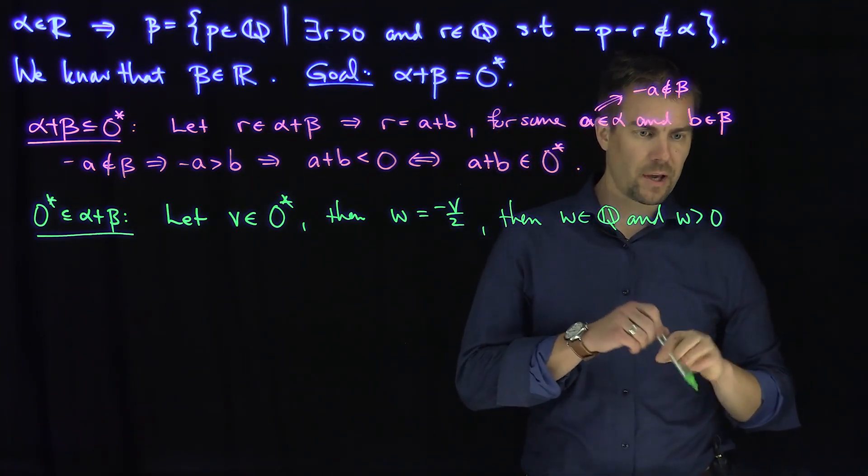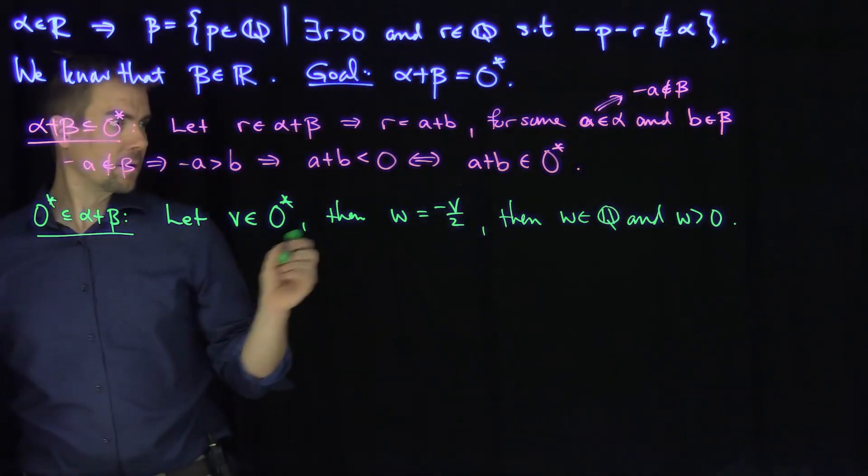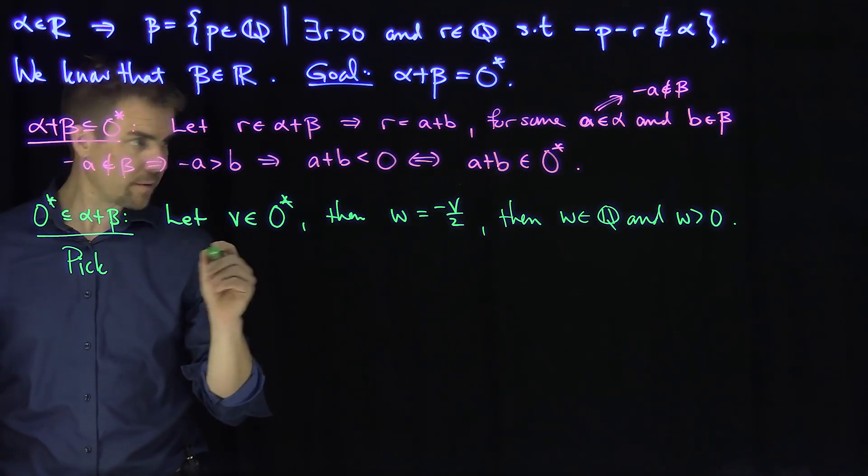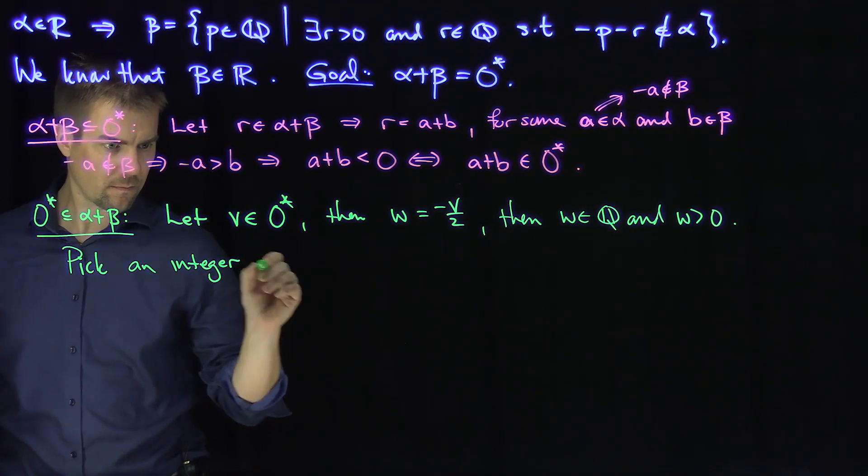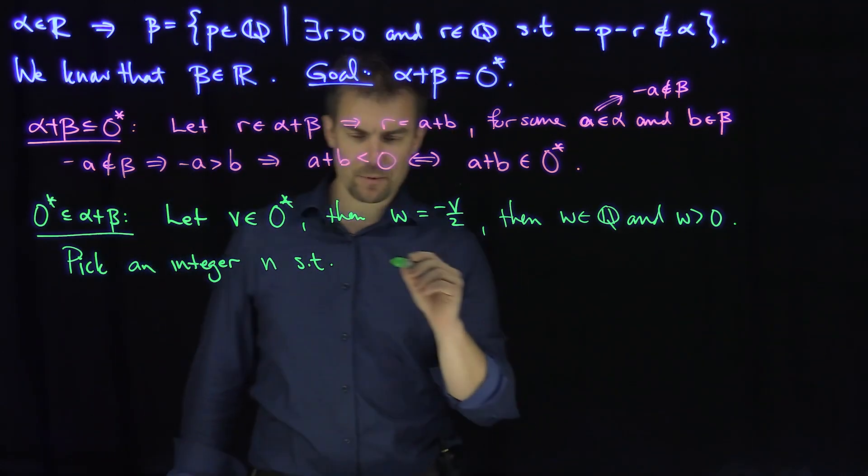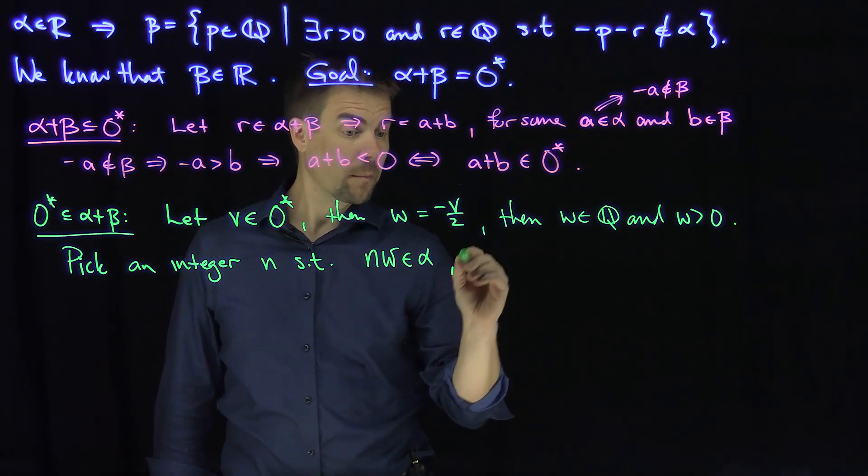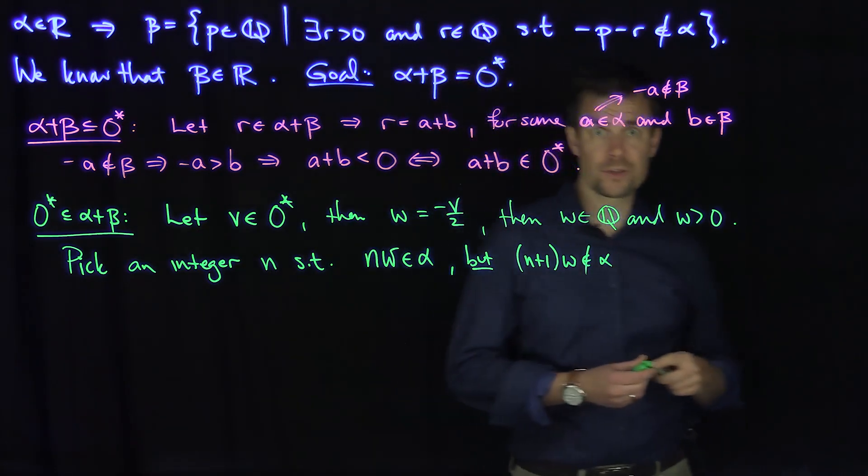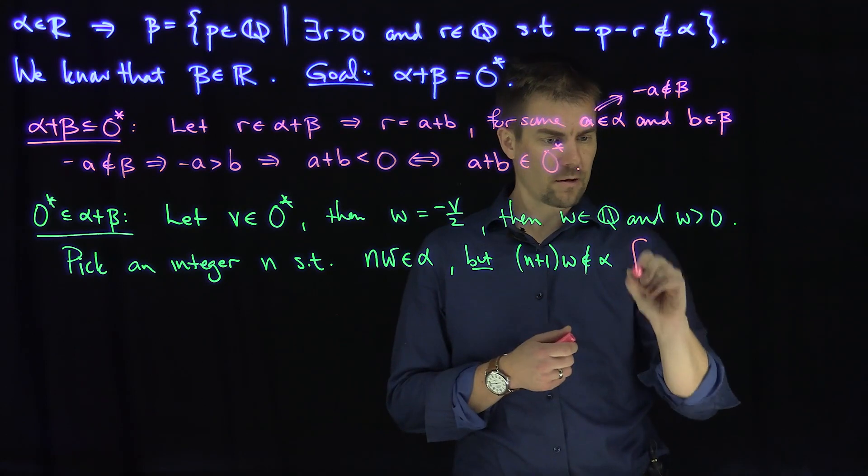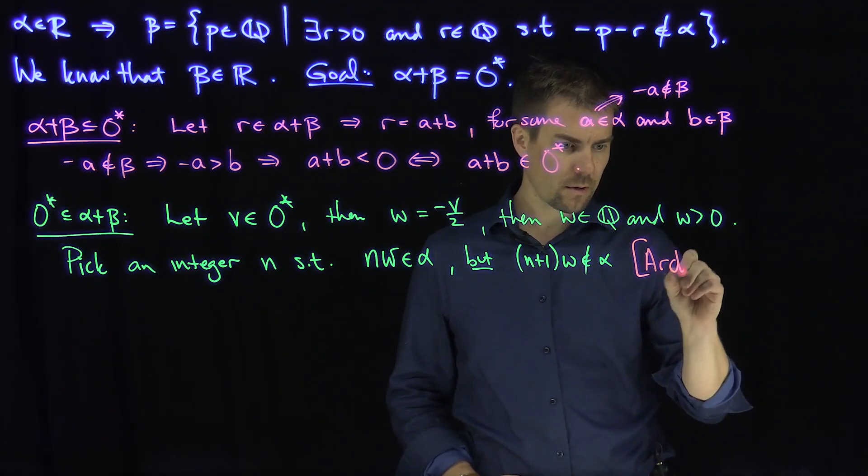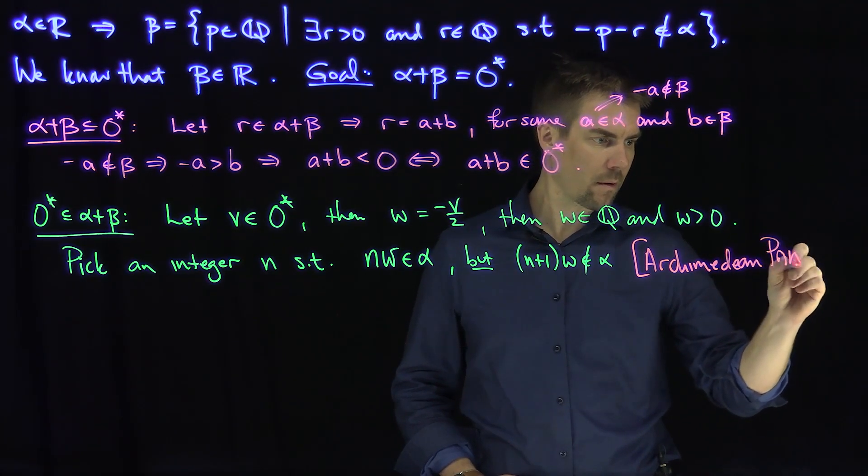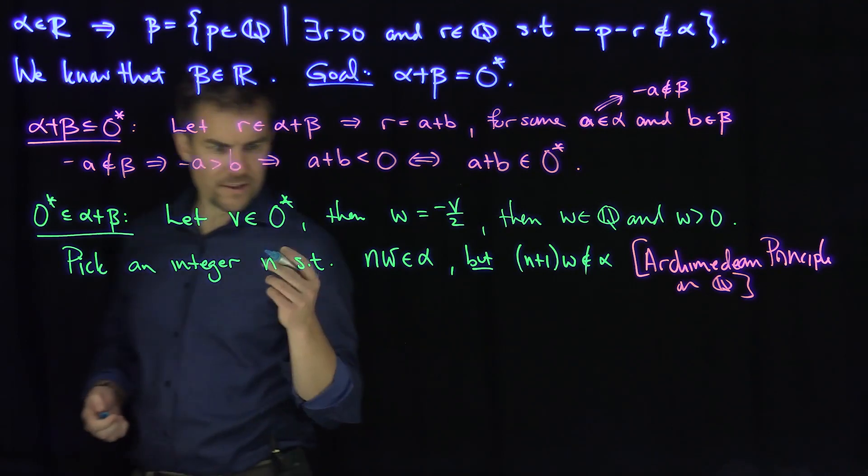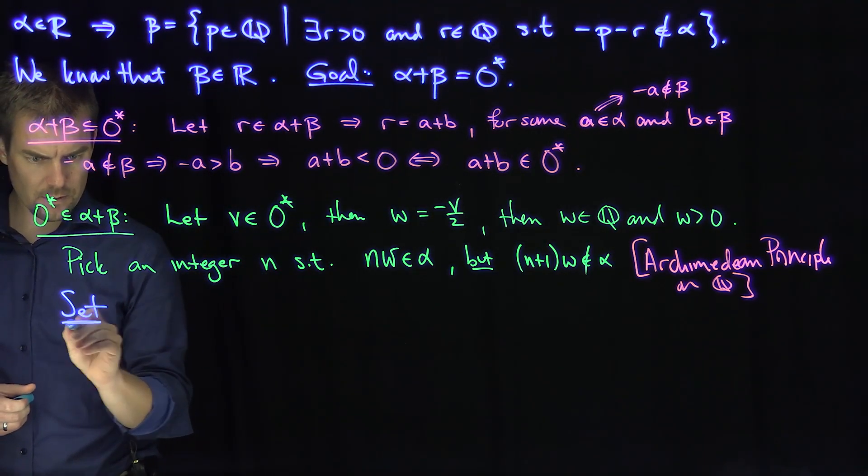Now what we can do is this. We can pick an integer n such that n times w is not in alpha, but n plus 1 times w is in alpha. And this is nothing more than just the Archimedean principle for Q. You can find such an n by the Archimedean principle. Now what we can do is set our candidate.